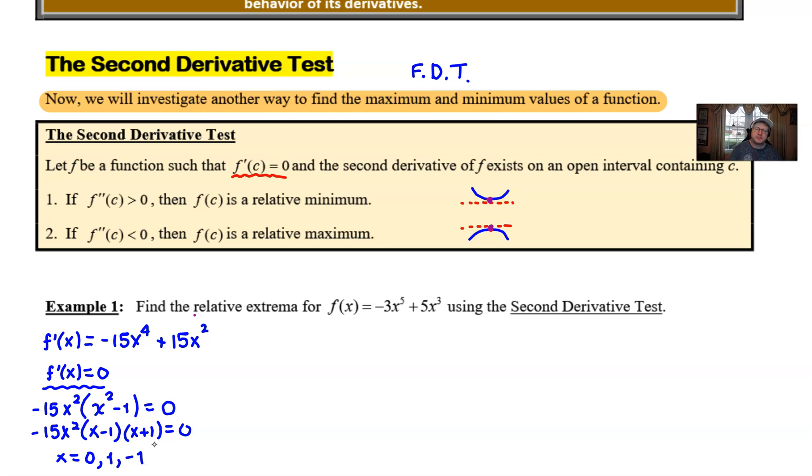So what we're supposed to do is we are supposed to take each one of those three critical values and plug them into our second derivative. Now we need to take that second derivative so I'm going to do that over here in purple. So f''(x) is going to be -60x^3 + 30x. Now you don't need to set that equal to zero or do any factoring with it or whatsoever. Just leave it as it is and then we will just systematically go in one by one and plug in each of these first derivative values that were critical.